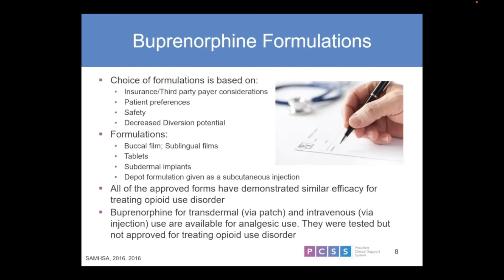There is one sublingual formulation approved for pain alone — it is a monoproduct, buprenorphine without naloxone, called Belbuca, and it is not approved for opiate use disorder — only for pain. It is a sublingual formulation available specifically for pain.